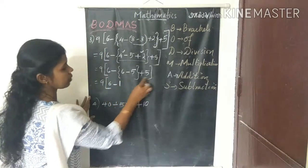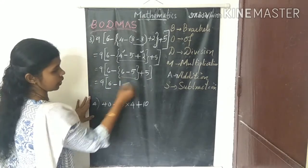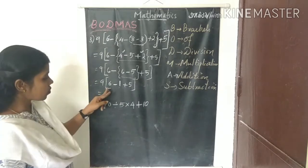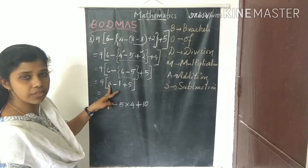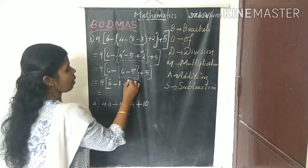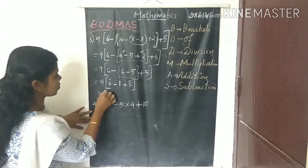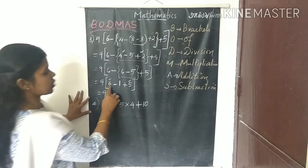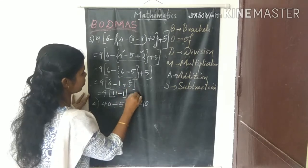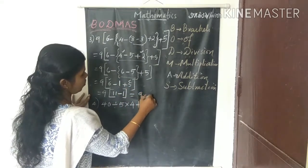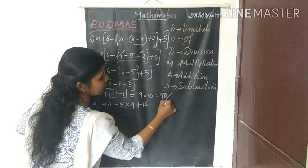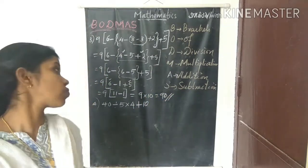Now inside the square bracket: 6 minus 1 plus 5. First do the addition: 6 plus 5 equals 11, then 11 minus 1 equals 10. So we have 9 × 10 equals 90. The answer is 90. This was a long problem with three types of brackets and multiple operations.